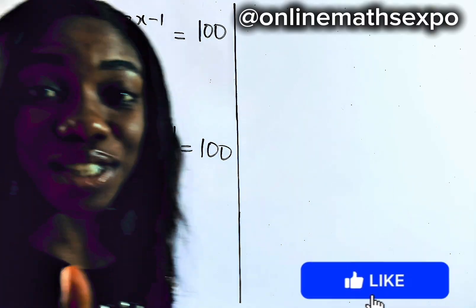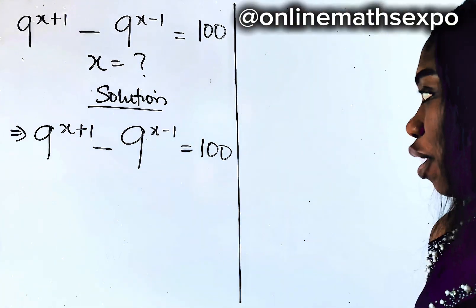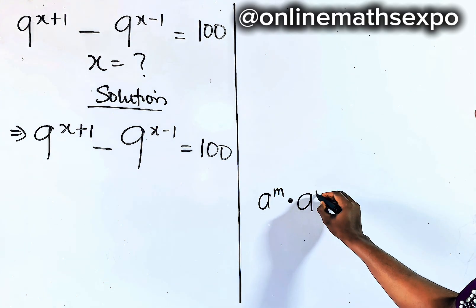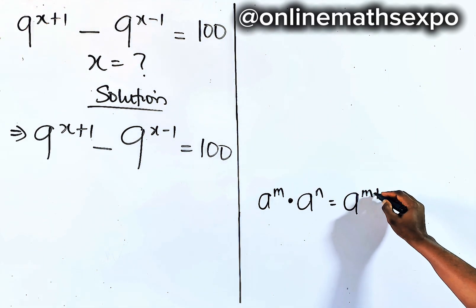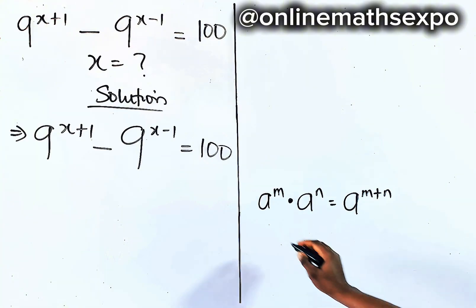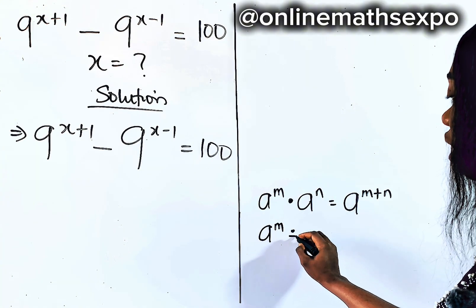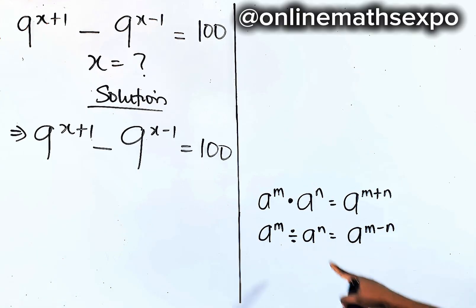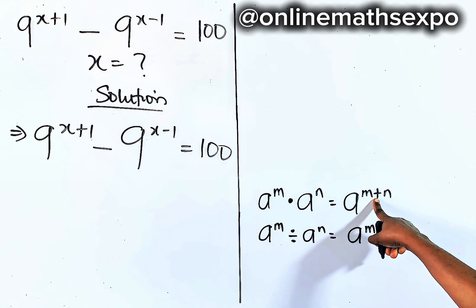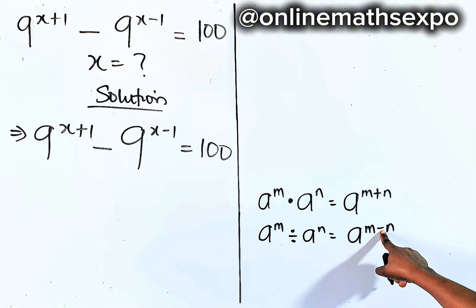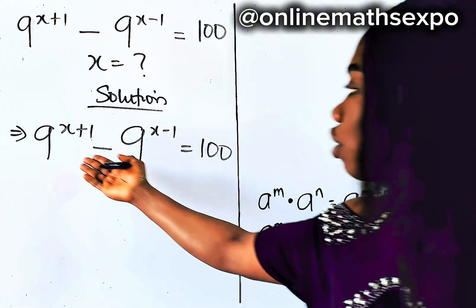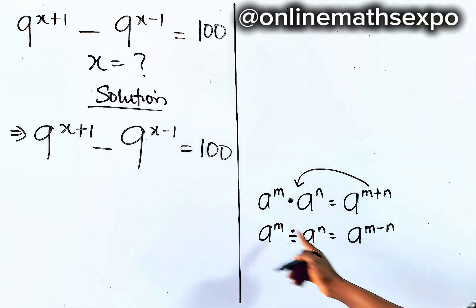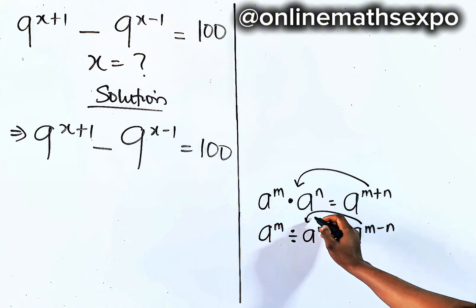What do you do at this point? I want to remind you of some exponential rules. For every a to the power of m multiplied by a to the power of n, it gives you a to the power of m plus n. For every a to the power of m divided by a to the power of n, it is a to the power of m minus n. For multiplication, it turns to addition of powers. For division, it turns to subtraction of powers. Now when you look at this, you observe that it's already of this form, so we're going to take it back for easy solving.